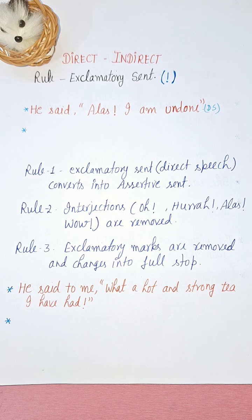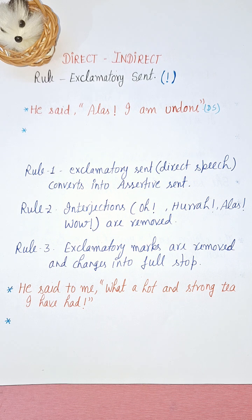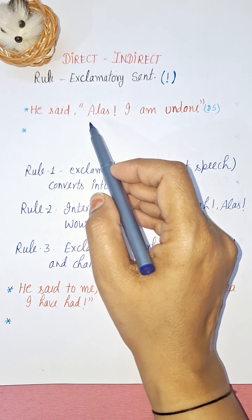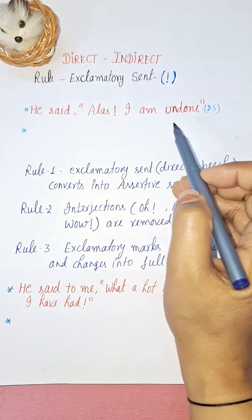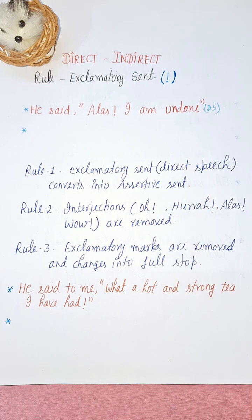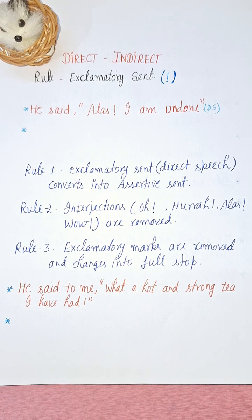First we need to know: what is an exclamatory sentence? An exclamatory sentence usually begins with exclamatory pronouns like 'how' or 'what' to give emphasis on the noun or object in the sentence. For example: 'What a calm place!' or 'How beautiful the task is!' Exclamatory sentences begin with a capital letter and always end with an exclamation mark. This is how you can identify exclamatory sentences.